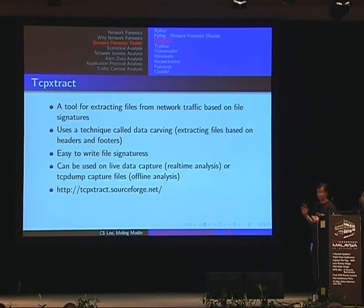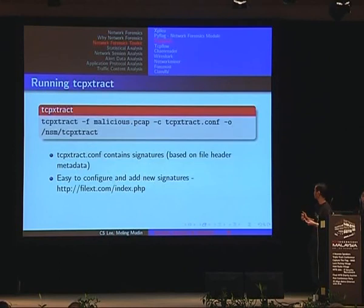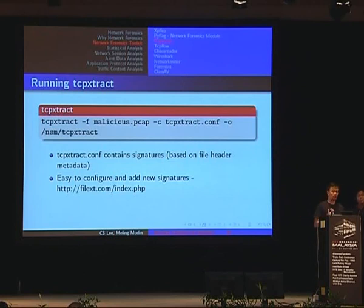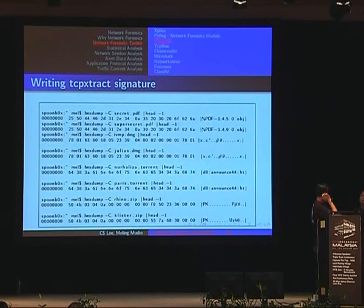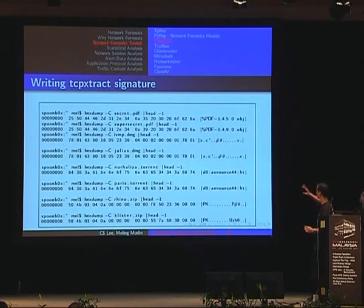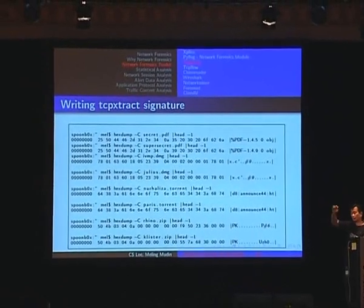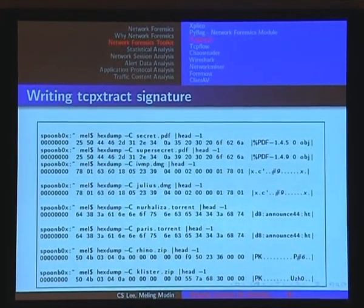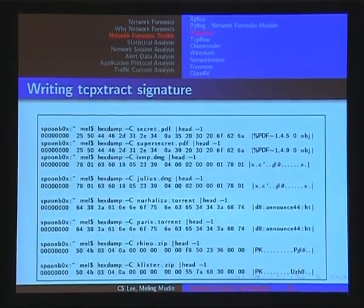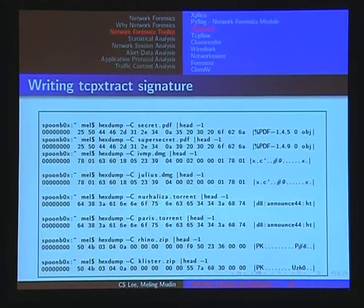You can write file signatures. If you go to fileext.com, this website has a lot of information about files. Here's how you write a TCPExtract signature. Doing a hex dump on secret.pdf and superscript.pdf, you'll see the common headers: %PDF-1.4.5 and %PDF-1.4.9. So if you want to detect all kinds of PDF files, you need to look for this signature.